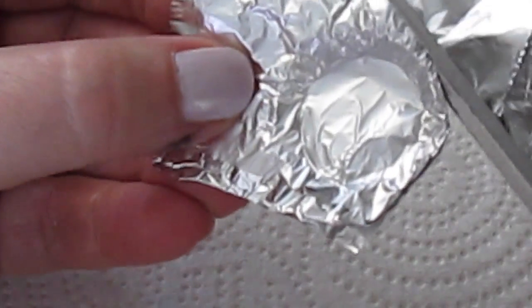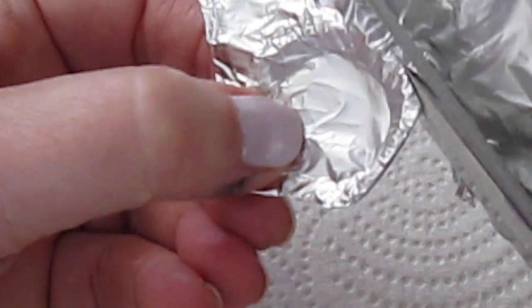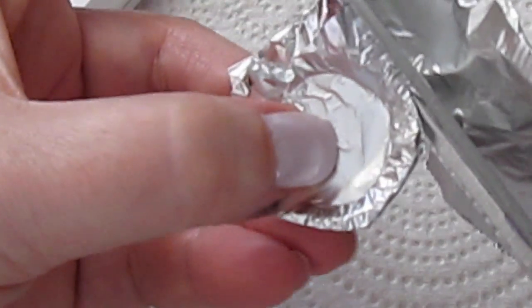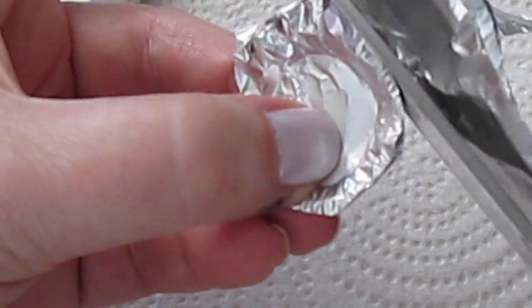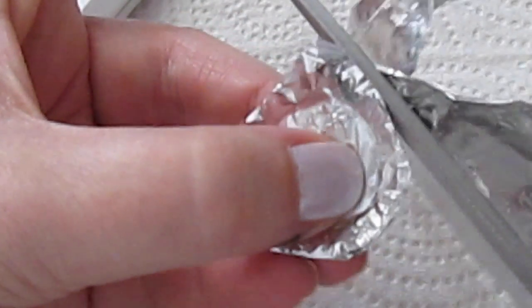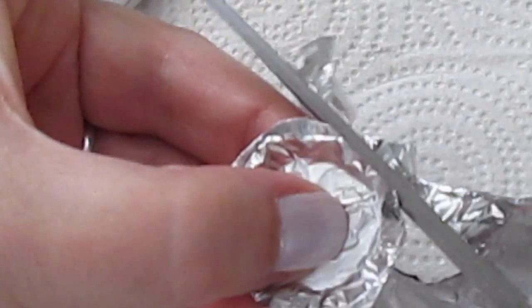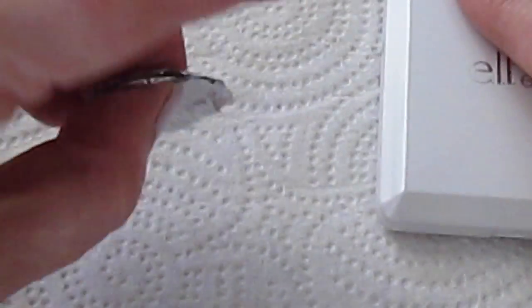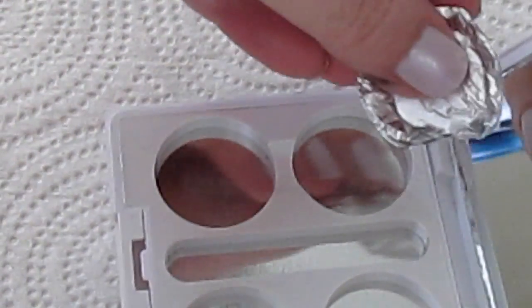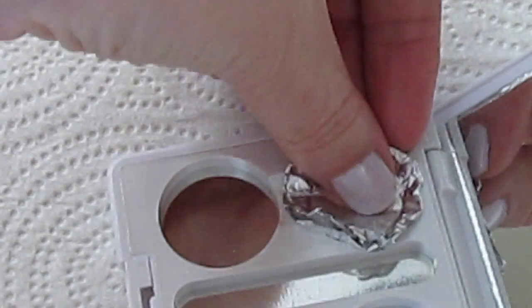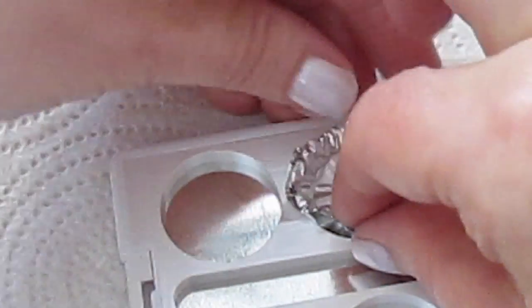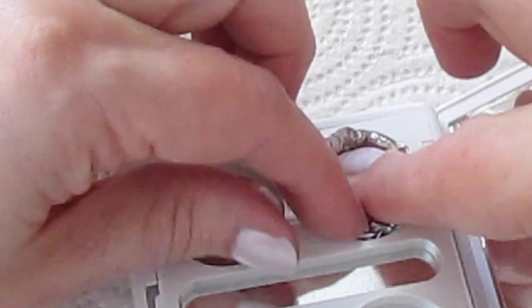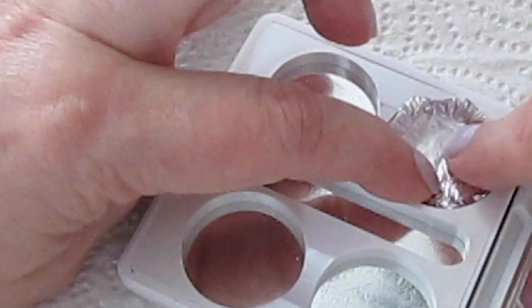Put the excess aside and then put the foil back in the hole, and press it back down again and mold it again to the hole in the quad.